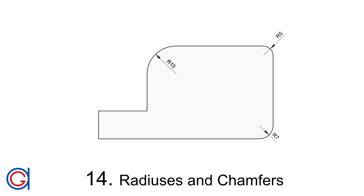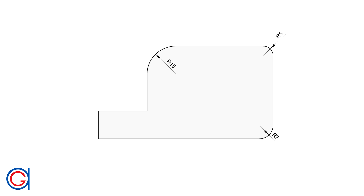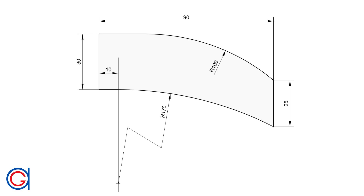Rule 14: How to dimension shapes with arcs, radii and chamfers. For arcs less than 180 degrees there are three styles depending on the size and space available: the first has both the dimension value and arrowhead inside the arc; the second has the arrowhead inside but the dimension value and line outside; the third has everything outside. If the center of the arc is too far to fit in the drawing, we can draw only part of the radius, aligned with the center.